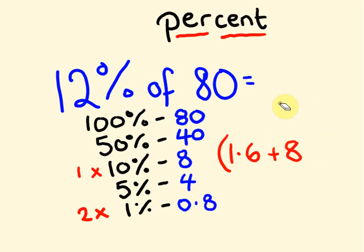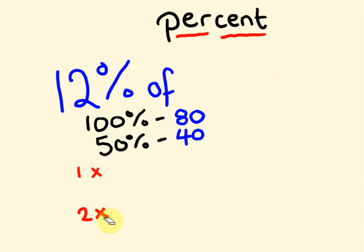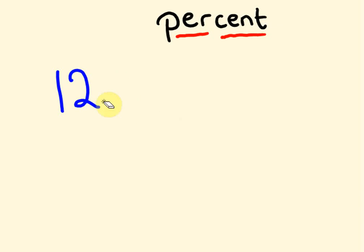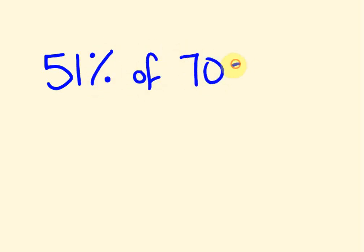So what about you give the next one a go? I recommend at the start you do write them out possibly, just to get it through your head a bit. And then we'll start trying to work it out mentally. What about we do 51% of 70? Can you work that out? Pause the video and then come back.